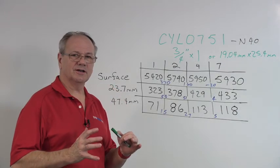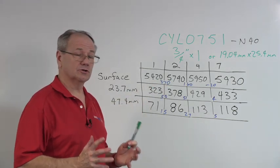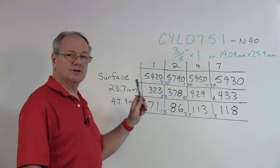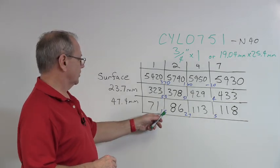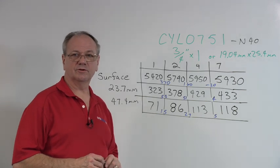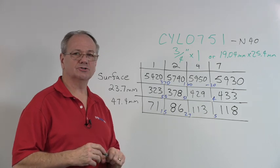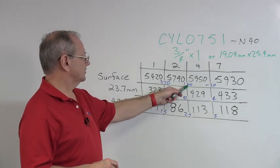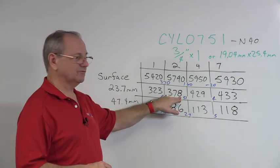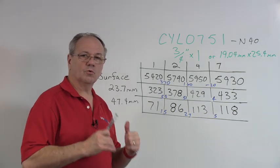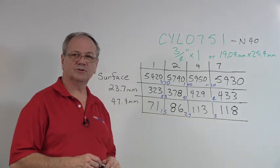To summarize our data at this point, as we doubled it from one inch to two inches long, it went up 370 on the surface, 55 at 23.7 millimeters away, and only 15 when we were at 47 millimeters away. When you double it again, you now have four times the magnet that you had originally, but we only added 160 on the surface. It only added 51 at the 23.7 millimeter distance, and then it only added 27 with the next step.